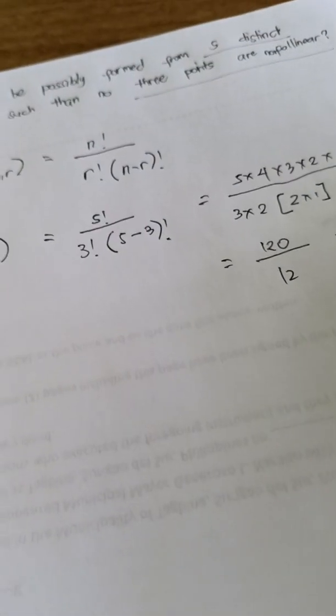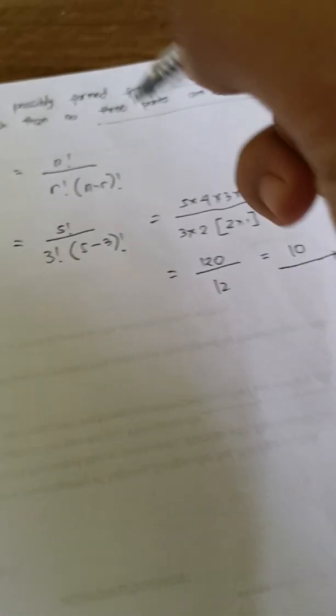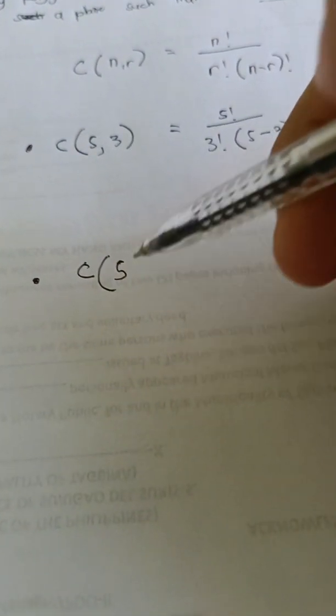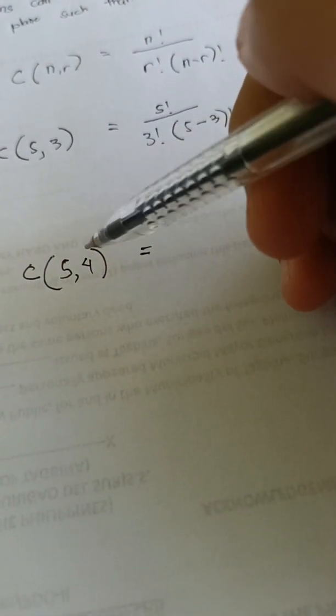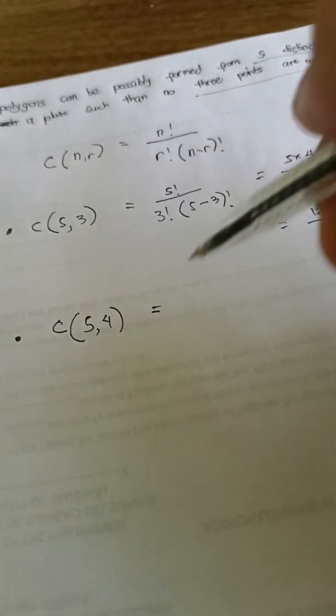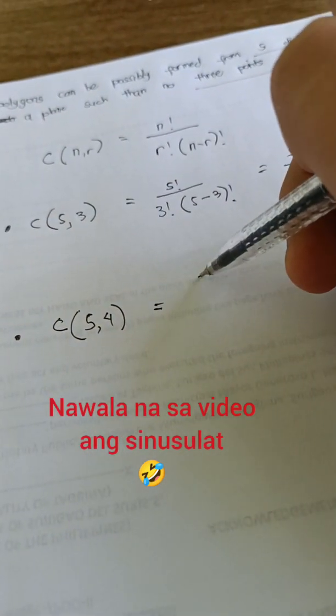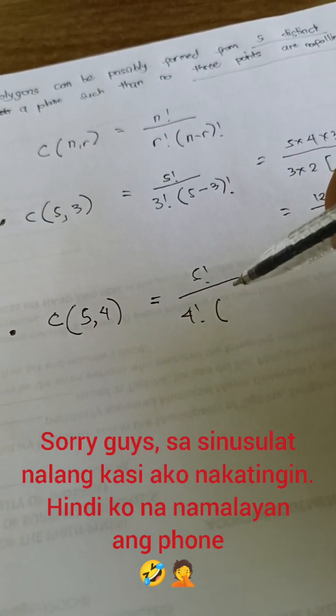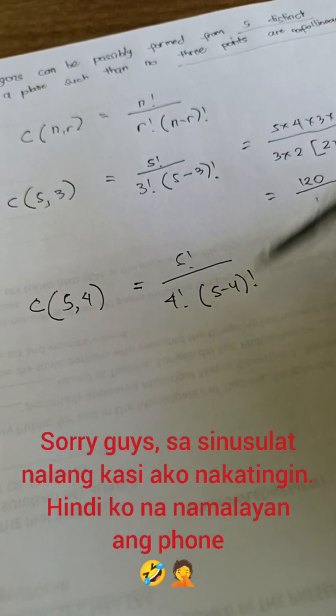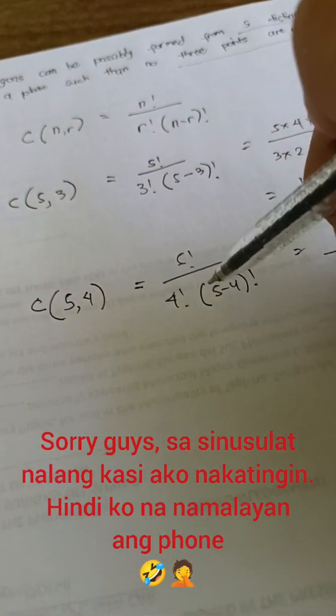However, we should consider also that you can choose from any of the distinct points. So meaning it doesn't end there with our solution. We also have to answer another solution. So combination of again five distinct points, but right now we are going to choose four, because four from three, then four, until it will be equal with the five distinct points which are non-collinear.